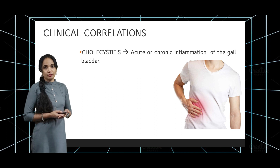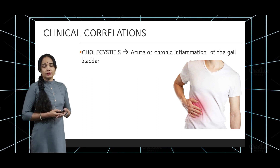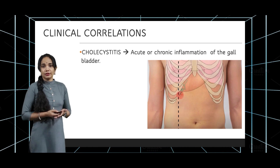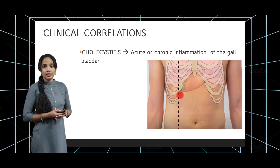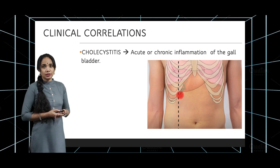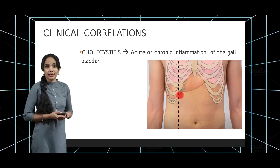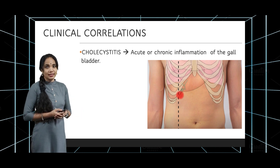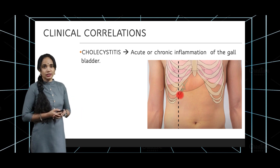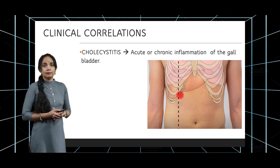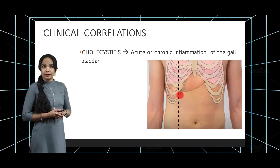When gallstones cause problems, we get cholecystitis — either acute or chronic inflammation of the gallbladder. In acute cholecystitis, we have something called Murphy's sign. You'll recall the fundus of the gallbladder is in close contact with the tip of the ninth costal cartilage — that is Murphy's point.